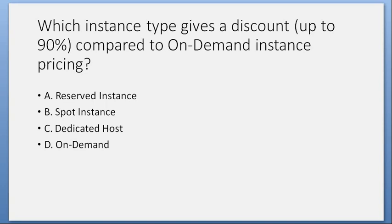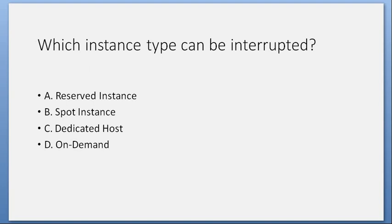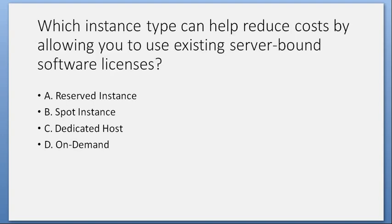Which instance type gives a discount up to 90% compared to on-demand instance pricing? Answer: B. Spot instances. Which instance type can be interrupted? B. Spot instances. Which instance type cannot be interrupted? D. On-demand. Which instance type can help reduce costs by allowing you to use existing server-bound software licenses? C. Dedicated host.